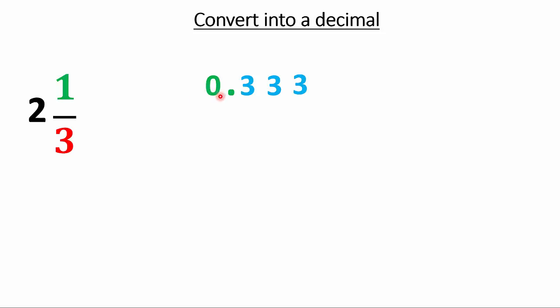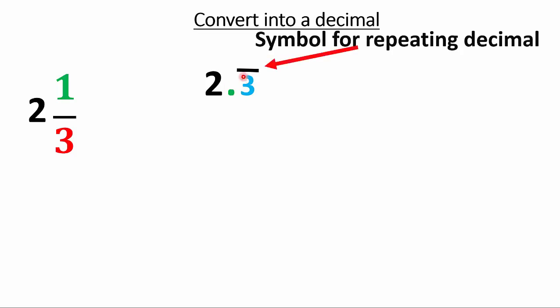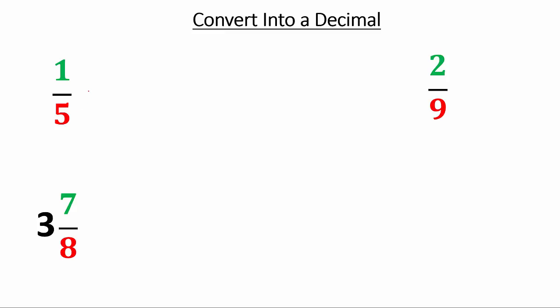Since it repeats forever, we write 0.333... but we don't want zero whole pizzas — we have two whole pizzas! So we kick out the zero and replace it with 2. The answer is 2.333... We keep just one 3 with a little hat over it — that notation tells us the digit repeats forever.